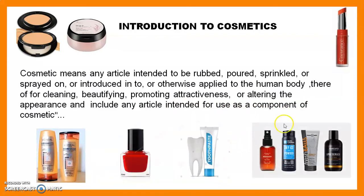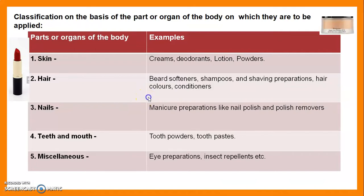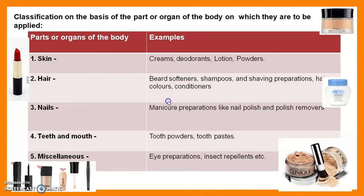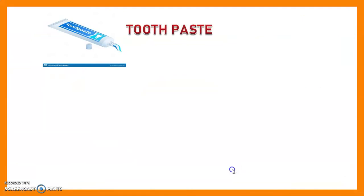The classification of cosmetics is based on the parts of the body. On the skin we use creams, deodorants, lotions, and powders. On the hair we use softeners, shampoos, shaving preparations, hair colors, and conditioners. On the nails we use manicure preparations like nail polish and polish remover. On the teeth and mouth cavity we use tooth powder and toothpaste. In the miscellaneous category we have eye preparations and insect repellent creams.